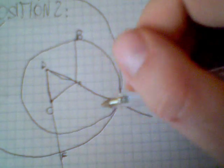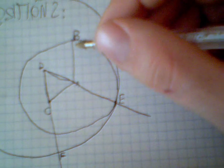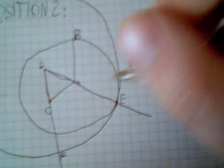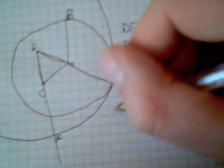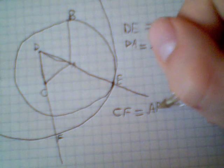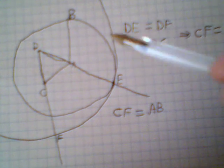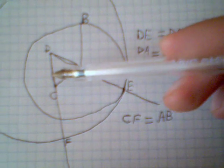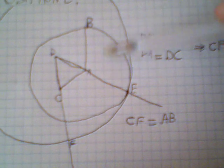But AE is equal to AB because they are radii of this circle. So I finally get that CF is equal to AB and I have built a line from this point C that is equal to this other line AB.